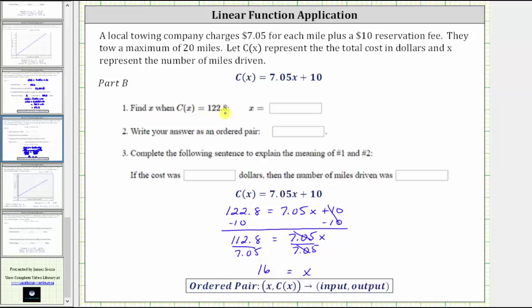So when the output or function value is 122.8, the input or X value is 16. As an ordered pair in the form X comma C of X, the ordered pair is (16, 122.8). The meaning: we were given C of X equals 122.8, which is the total cost in dollars, and we found X equals 16, where 16 is the number of miles driven. So if the cost was $122.80, then the number of miles driven was 16.